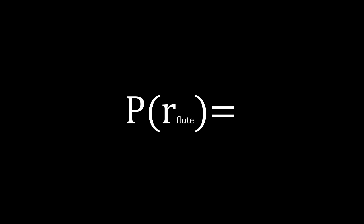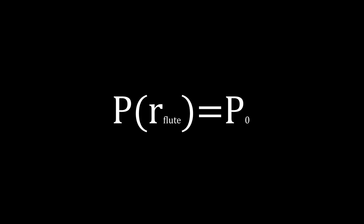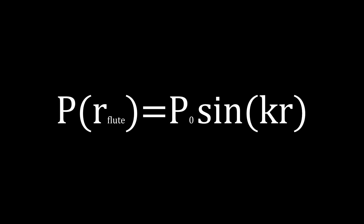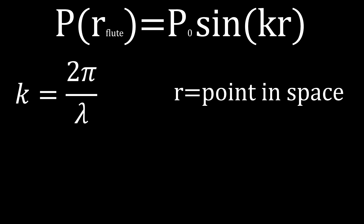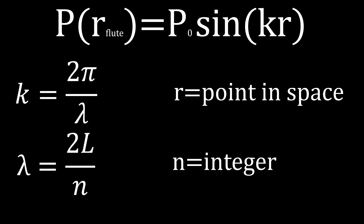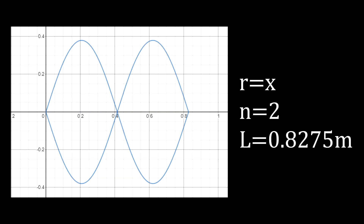For a flute, which is a type of open tube, its wave equation for pressure can easily be calculated by multiplying its initial pressure by sine of kr. k equals 2π/λ, r is a point in space, λ equals 2 times the length over n, and n is an integer for its harmonic number. Notice when looking at the graph for the initial pressure times sine of kr, there are nodes — points in space where the pressure in the tube is equivalent to the atmospheric pressure.